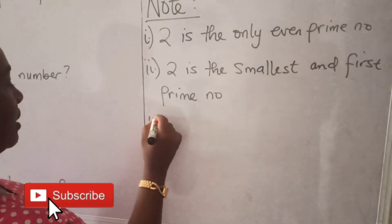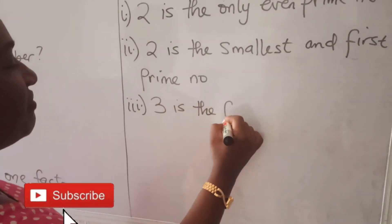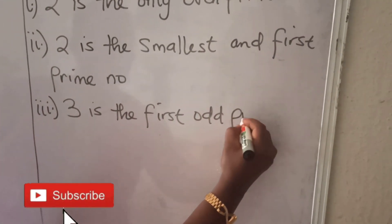Three. Three is the first odd prime number.